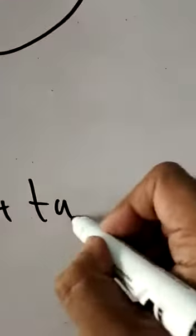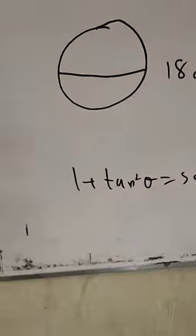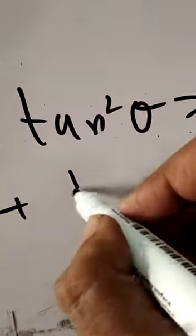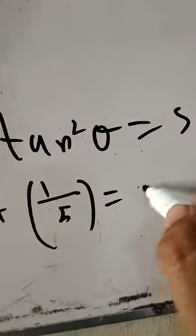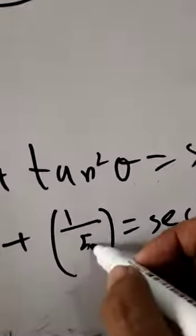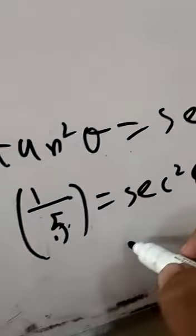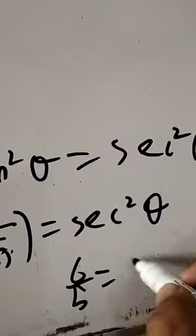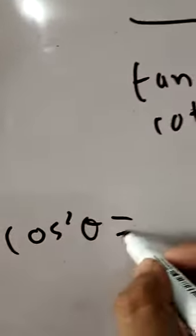We use the identity: 1 plus tan² θ is equal to sec² θ. So, cos² θ is equal to 5 upon 6. Therefore, cos θ is equal to the square root of 5 upon 6.